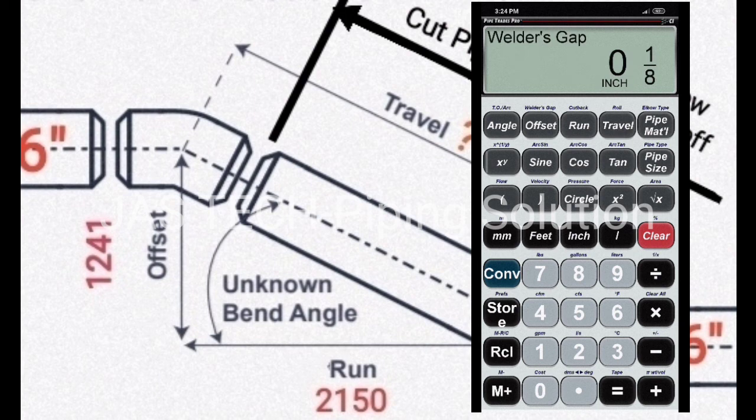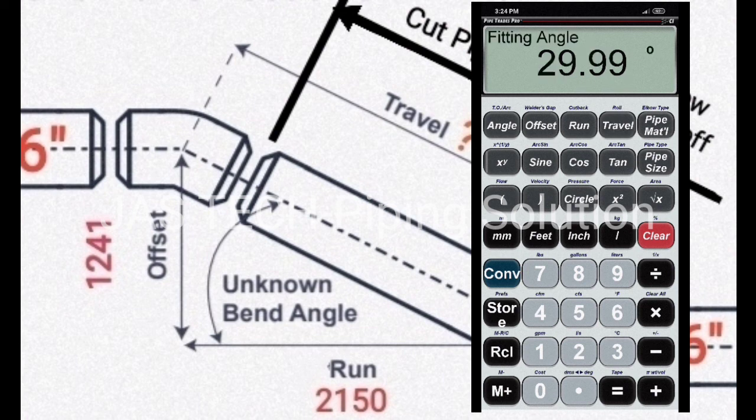Again press Travel. Welder gap coming. It is 1/8 inch. You need MM. Just press MM Button. 3.175 mm. Again press Travel Button.